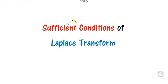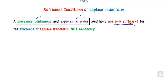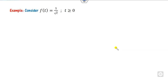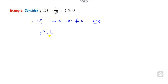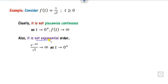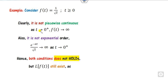What is the sufficient condition for the Laplace transform? Piecewise continuity and exponential order are only sufficient conditions — remember, they are not necessary. This means if any function f(t) satisfies these two properties, then the Laplace transformation always exists. But since they are not necessary, the converse is not true. For example, consider the function 1/√t: at t approaching 0 from the positive side the limit is infinity, which is not finite, so it is neither piecewise continuous nor of exponential order. Yet the Laplace transformation still exists.